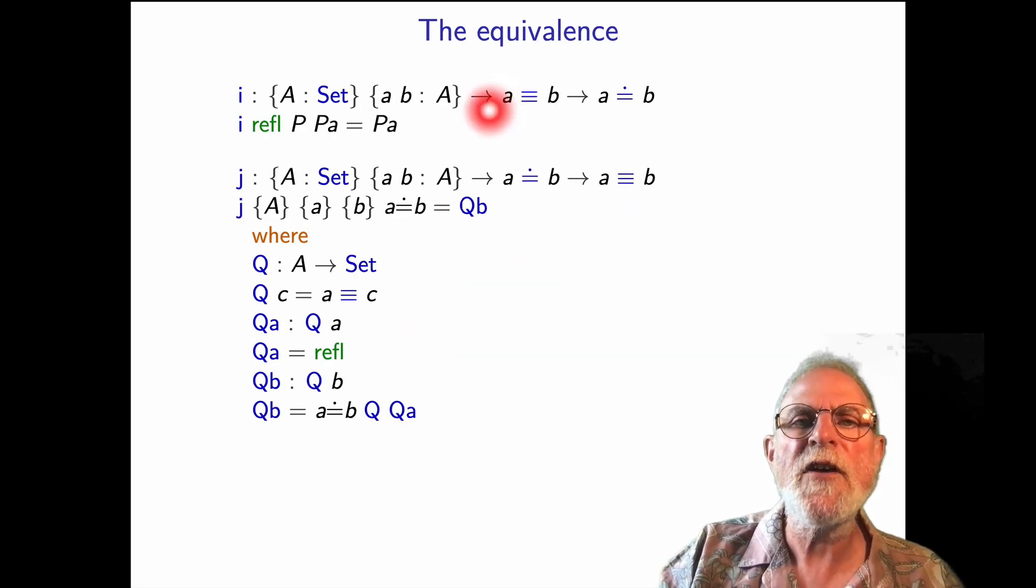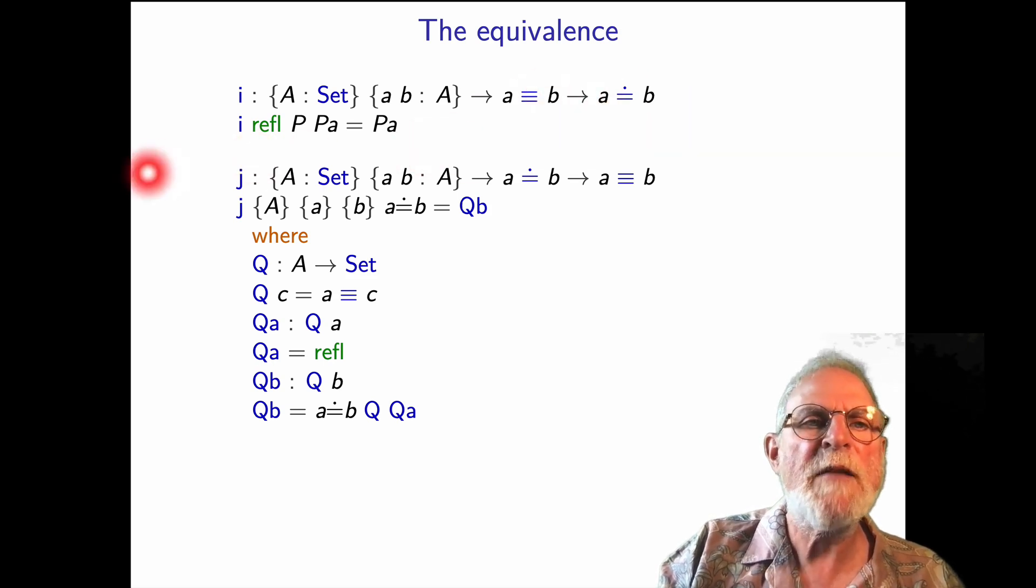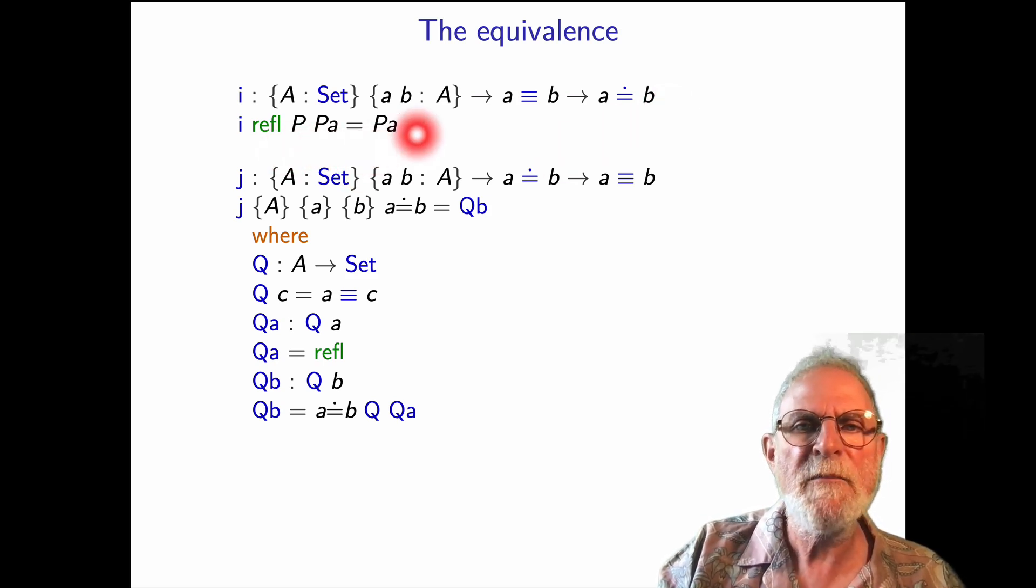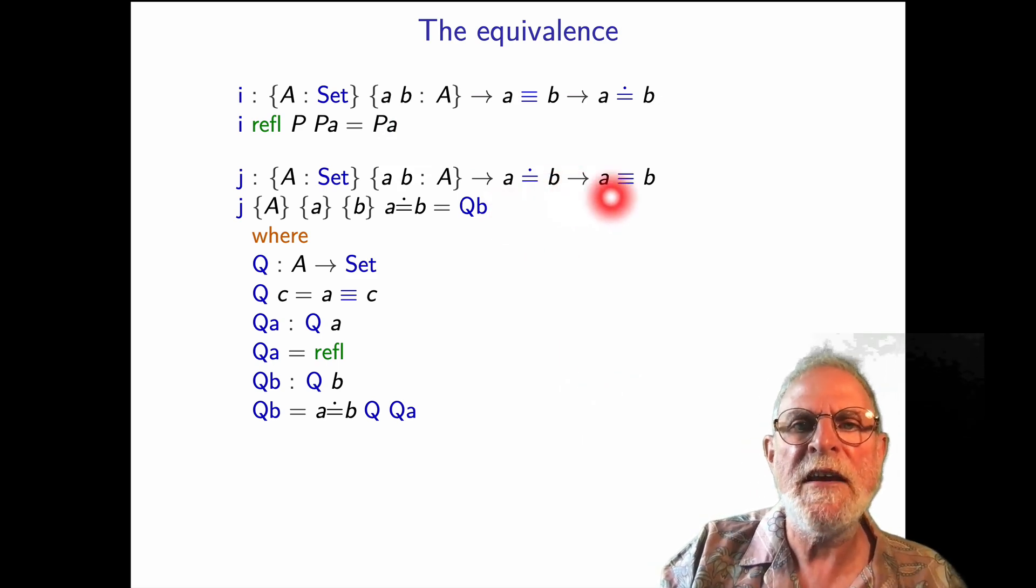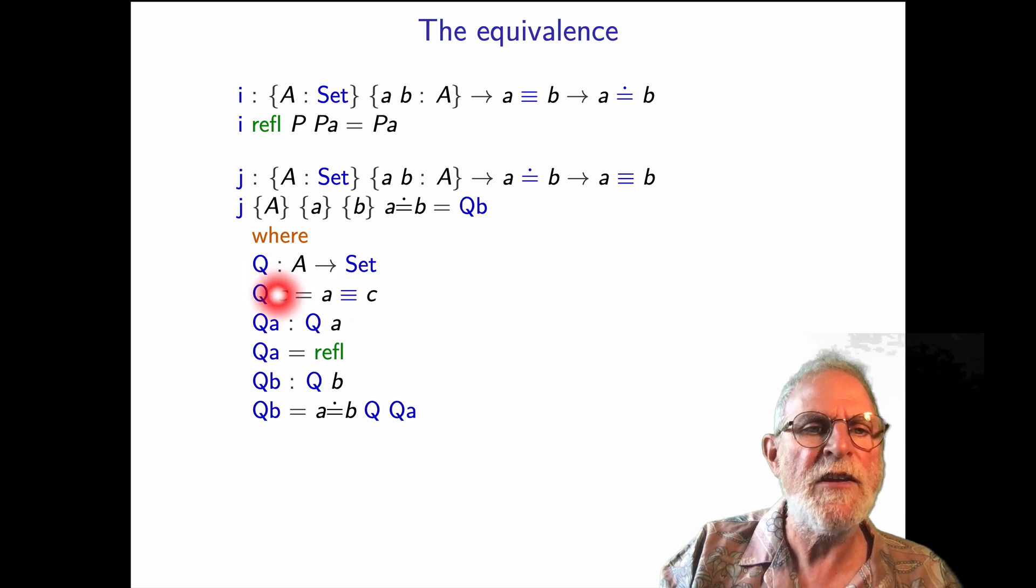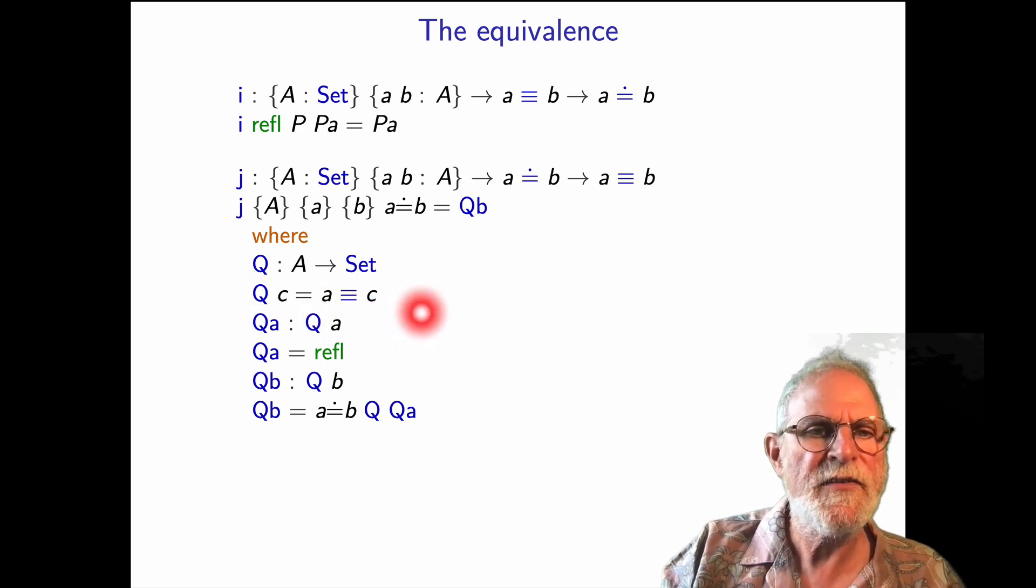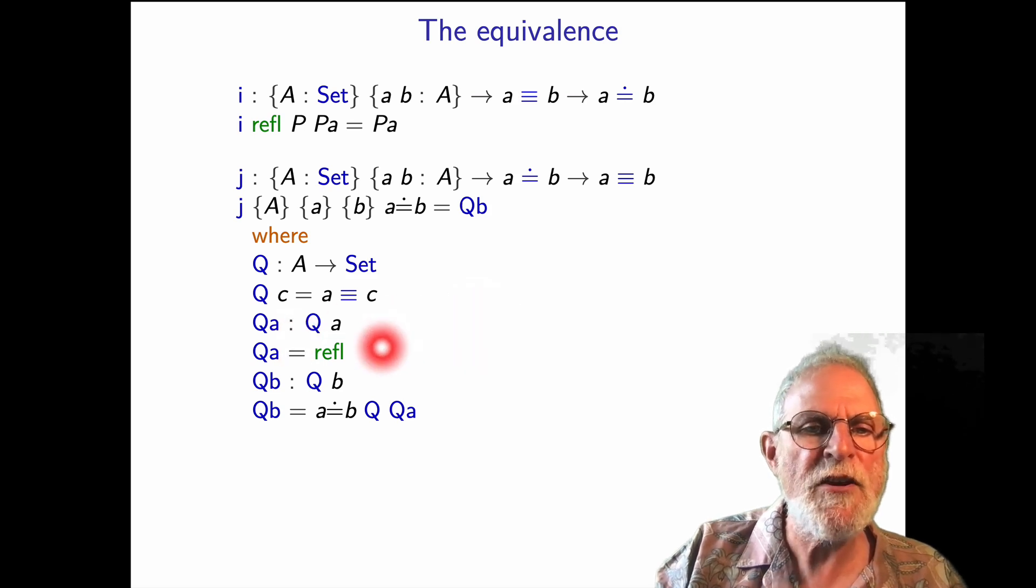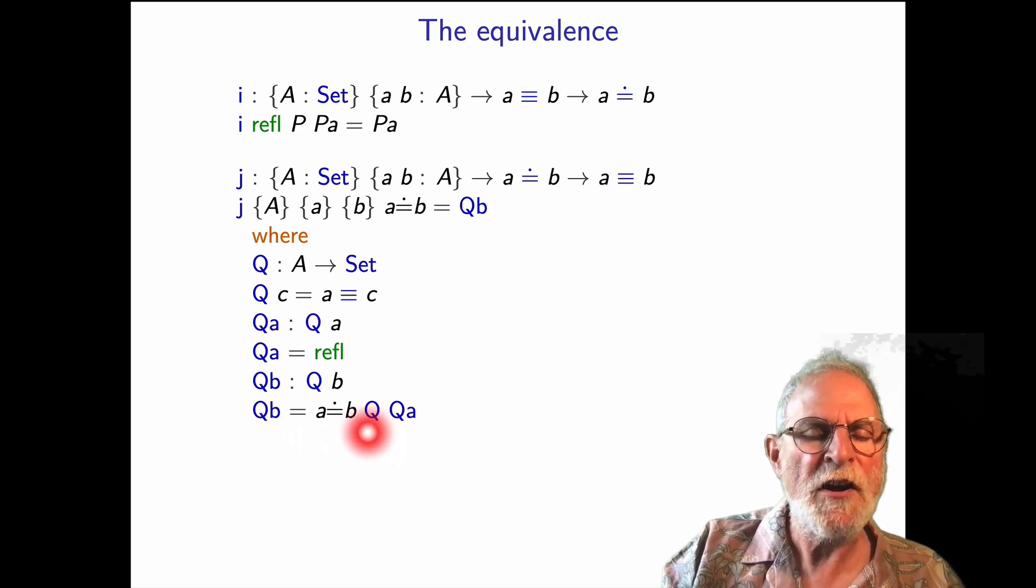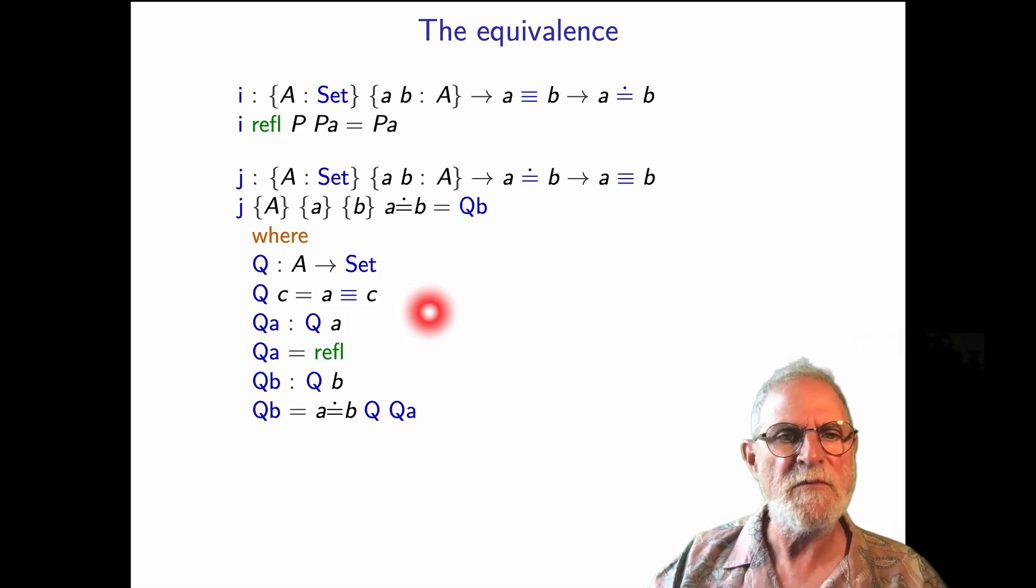So now we actually get the equivalence, we can show that a equals b in Martin-Löf implies a equals b Leibniz. And that's easy. So a equals b, we pattern match against Refl. Now we need evidence for a equals a. And that's easy, because given P and P of a, we just return P of a. The other way around, we've got Leibniz and we need to show Martin-Löf. It's very similar to the proof of symmetry. But now, instead of taking Q of c to be P of c implies P of a, we're going to take it to be a is equivalent to c. And then obviously Q of a holds by reflexivity. And then again, a equals b on Q and Q of a transposes that to give us a proof of Q of b, which is a is equivalent to b, which is what we wanted to show. So very similar proof.